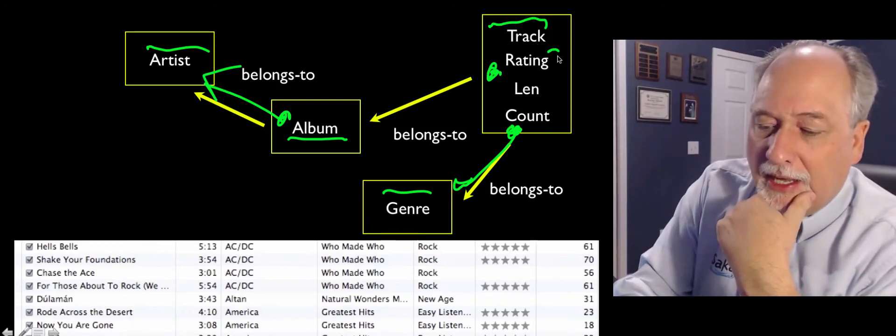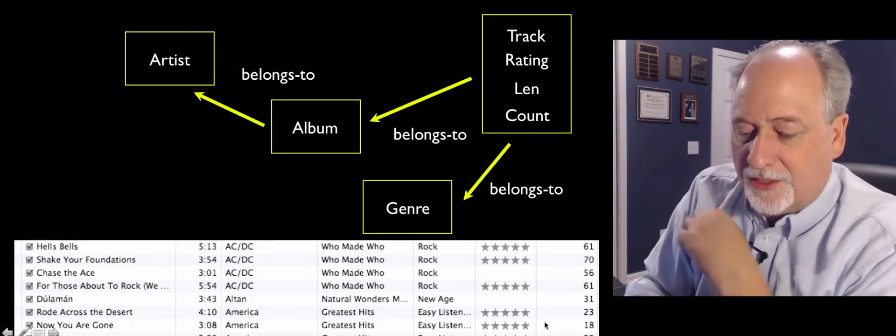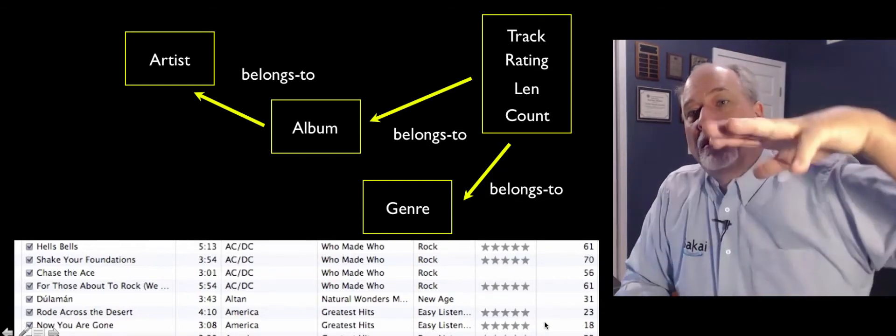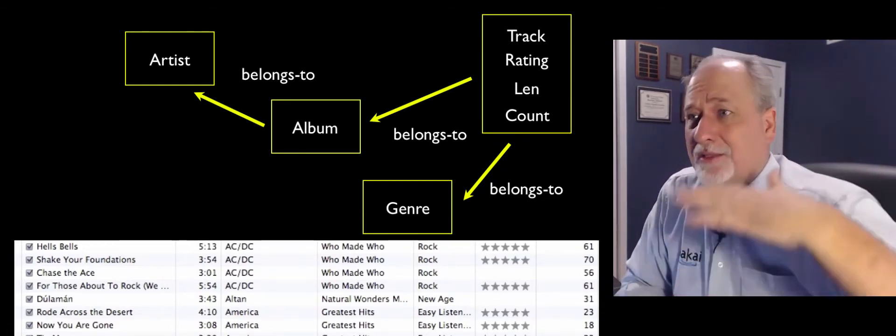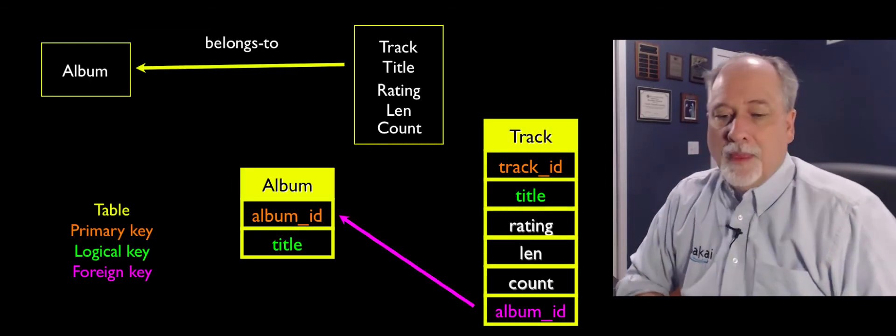They're not the data. The data is like rating, length, count, title of the album, title of the track. That's the actual data. These keys that we're gonna add to these things are just to model the relationships between them.